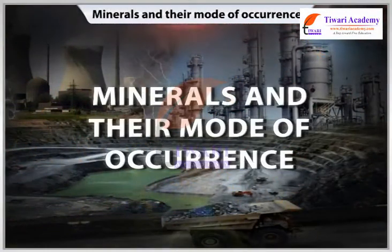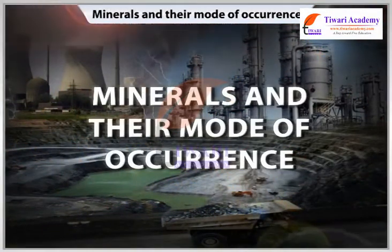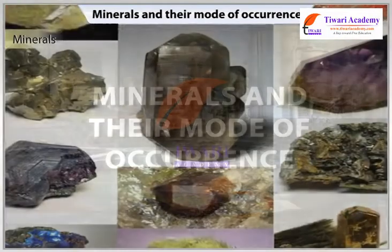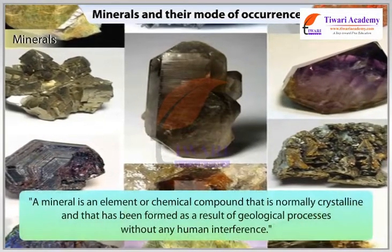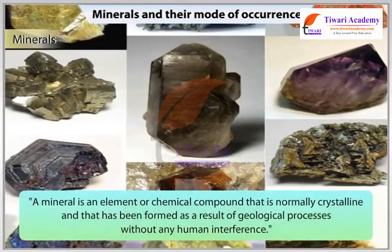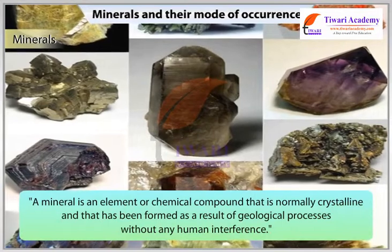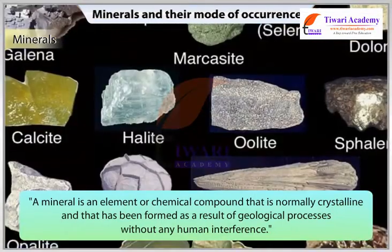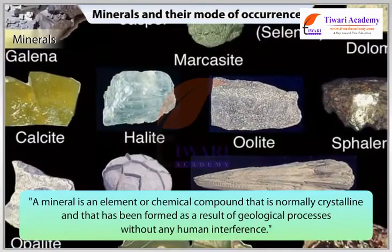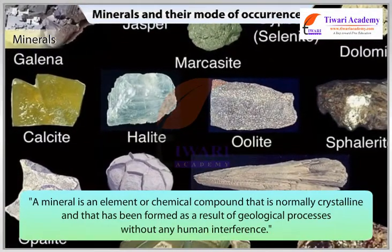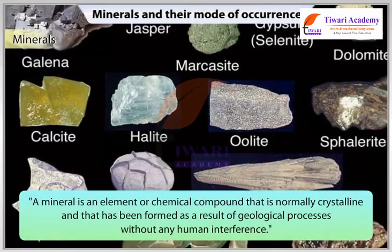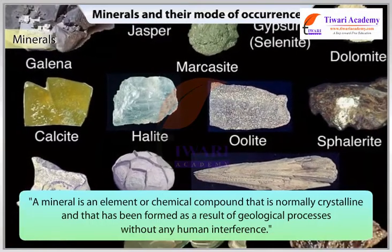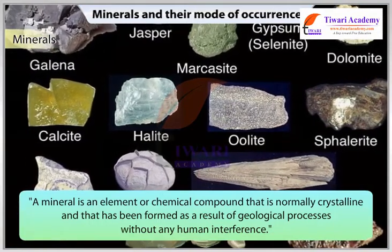Minerals and their mode of occurrence. A mineral is an element or chemical compound that is normally crystalline and that has been formed as a result of geological processes without any human interference.